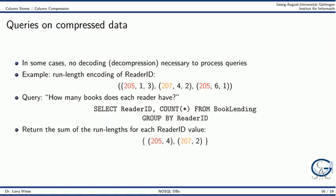A further advantage of column compression is that some queries can be answered on the compressed data directly. As an example, consider the run length encoding of the reader ID column. The query asking how many books each reader has can be answered by simply returning the sum of the run length for each reader ID value.